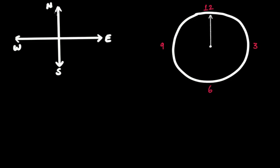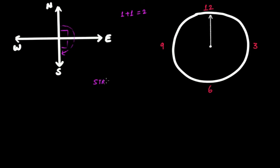Now, when you rotate from north to east, you are rotating by a right angle, and we represent a right angle by this symbol. If we further move from east to south, we take another right angle. So one right angle plus one right angle — that is two right angles — and clearly this whole angle is a straight angle. Therefore we can say that a straight angle is equal to two right angles.